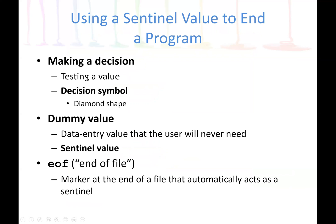We need to learn how a program makes a decision. If we are going to write a loop, we should have a decision: when the counter variable reaches 10,000, we stop. We need to test a value, and this decision in a flowchart is represented using the diamond shape. We can also use a sentinel value — a data entry value that the user will never need. For example, a while loop: while x is not equal to 10, do something. Anytime we enter 10, the loop will stop, and 10 becomes the sentinel value to stop the loop.